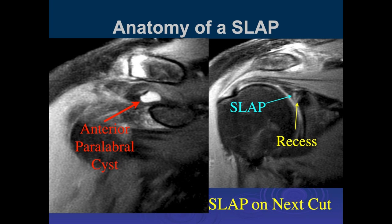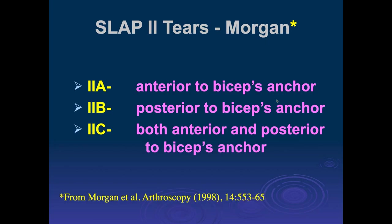On the abnormal case, we see the recess, then labrum, then a bright signal through the substance of the superior labrum going into the biceps anchor — that's a SLAP tear. There's a paralabral cyst which makes us more confident it's an actual tear, along with abnormal signal within the biceps anchor. Morgan further divided Type 2 tears into 2A (anterior to biceps anchor), 2B (posterior), and 2C (both anterior and posterior).